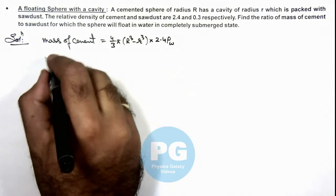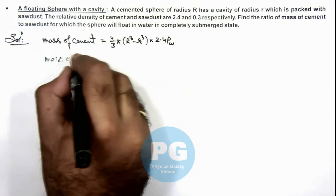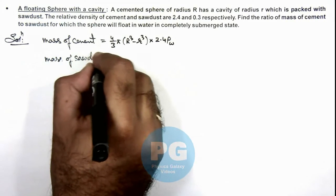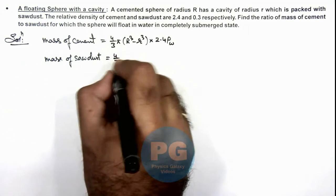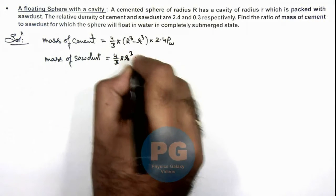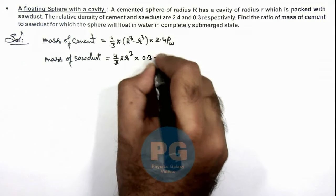Similarly we calculate the mass of sawdust in this sphere. This will be 4 by 3 π r³ multiplied by 0.3 times ρ of water.